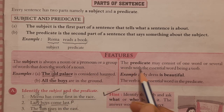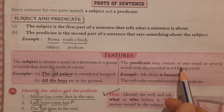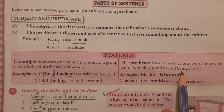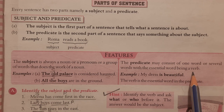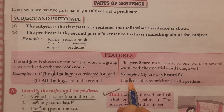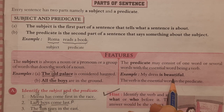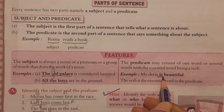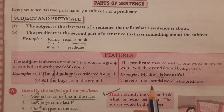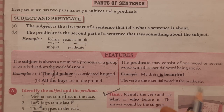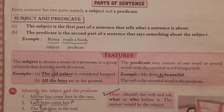Some features of the predicate: the predicate may consist of one word or several words, with the essential word being a verb. It is very important that in the predicate, the most important part is a verb. For example, 'My dress is beautiful.' Here 'my dress' is the subject. 'Is' is the helping verb. 'Is beautiful' is the predicate, and the verb is the essential part of the predicate.